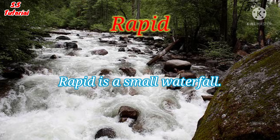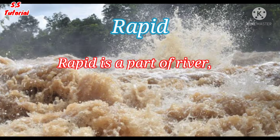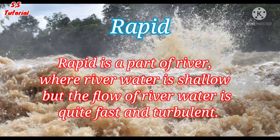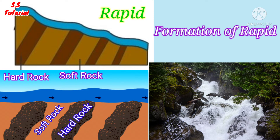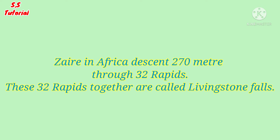Rapid is nothing but a small waterfall and is the most characteristic feature in the upper course of a river. Rapids are formed due to sudden steepening of stream gradient, where river water is relatively shallow but the flow is quite fast and turbulent. When a series of hard and soft rocks are placed vertically or diagonally side by side, soft rock erodes quickly forming a series of small steps like a staircase. The Congo River in Africa descends 70 meters through 32 rapids, and these 32 rapids together are called Livingstone Falls.